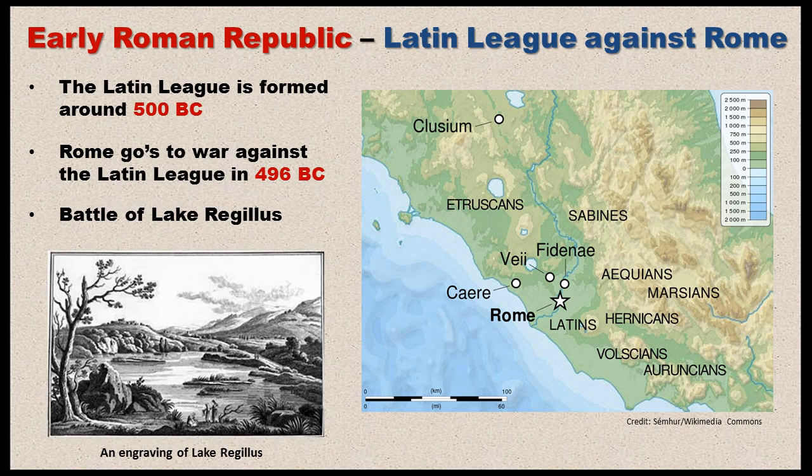The first region the Romans had to straighten out were the Latins. There were eight towns that formed the Latin League, and they went to war against Rome — eight against one. But the Romans prevailed in the Battle of Lake Regulus, and as a result, most of the Latin cities formed an alliance with Rome in the lead. This was relatively easy because the Latins shared a common language, common culture, and the same gods with the Romans.